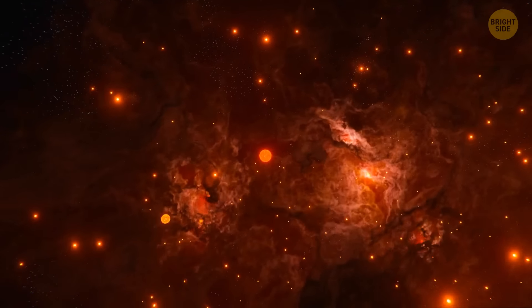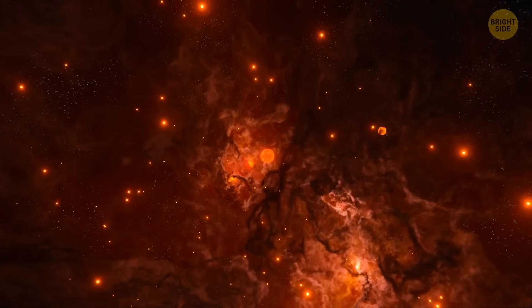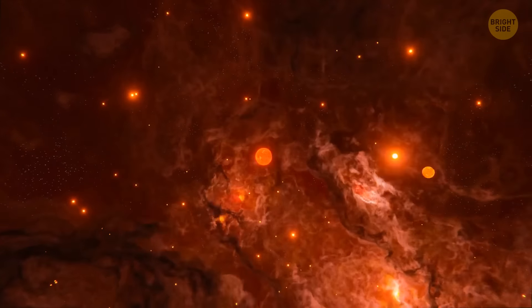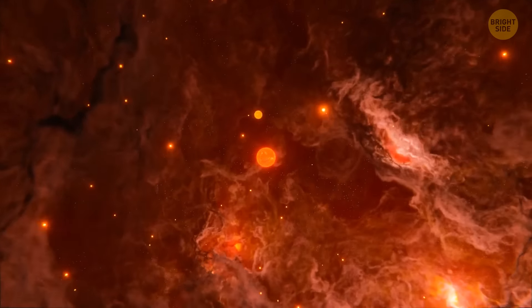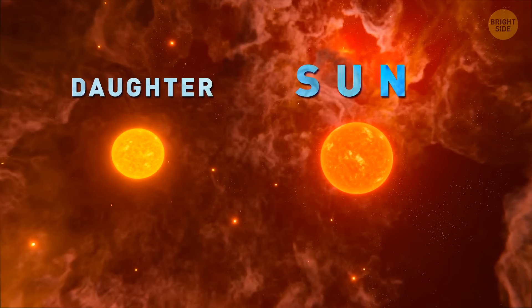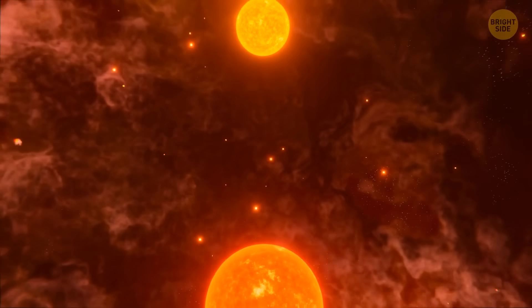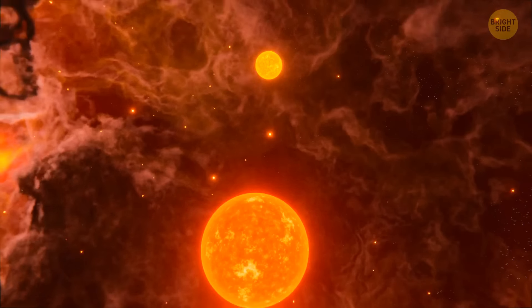So, yeah, the Sun almost certainly had a twin. But what happened to it? And where is it now? Unfortunately, this star is most likely already very far away. Probably after their birth, the Sun and Sun 2.0 spent only a couple of million years together. And then they had to separate completely.